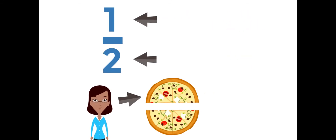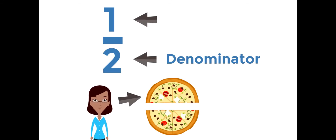The bottom number of a fraction is called the denominator. The denominator is the total number of parts. The top number is called the numerator. The numerator tells us how many parts we are talking about. In this case, Cindy is having one part of the pizza — the other part of course is going to Chomsky.